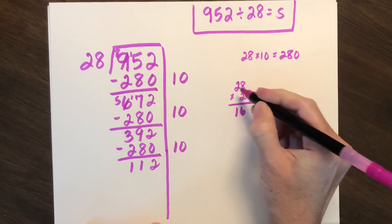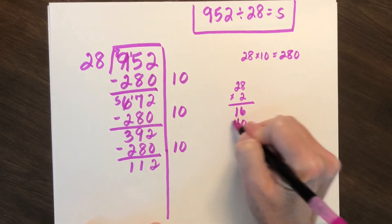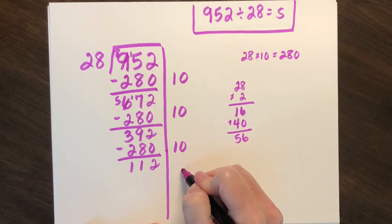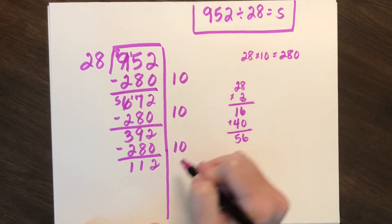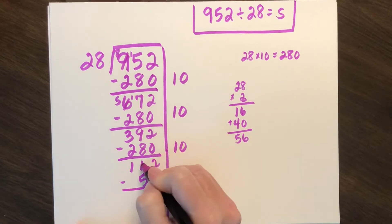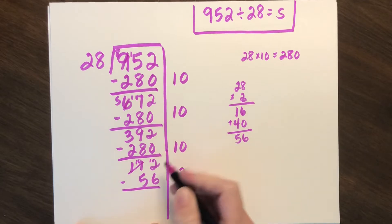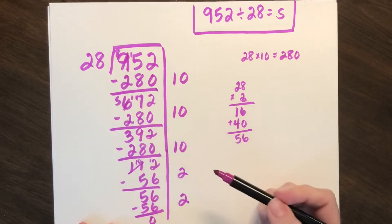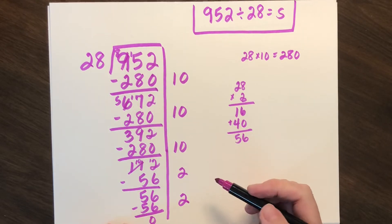8 times 2 is 16. 2 times 20 is 40. So 56. I can at least do two groups of 28. And I have 56 left over, so I can do another group of 2.